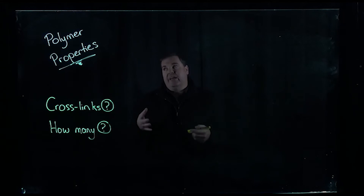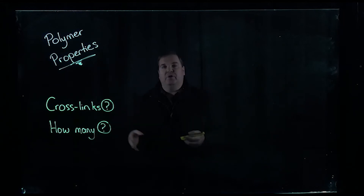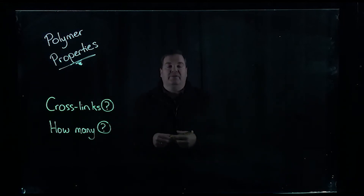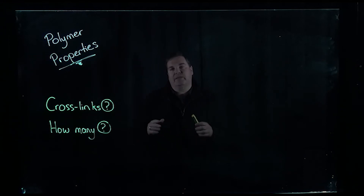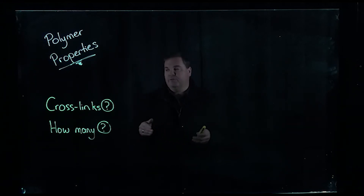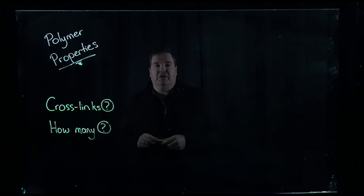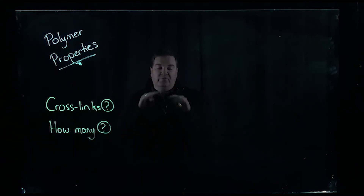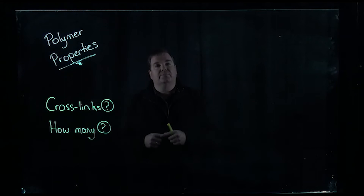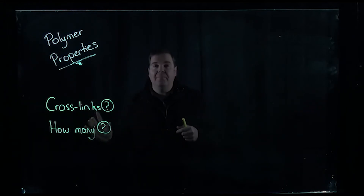When we're looking at the properties of polymers and trying to predict what sort of properties they'll have, there are a couple of things we want to investigate and consider first. The first thing is: do we have cross links in our polymer chain? When we've got our long strands of polymers, do we have links joining them together? And then the second thing we need to consider is how many of those links do we have.